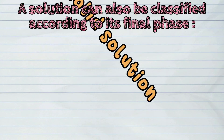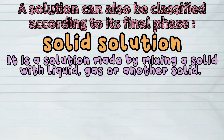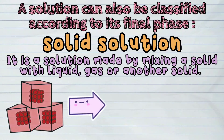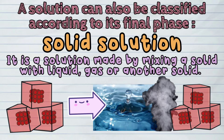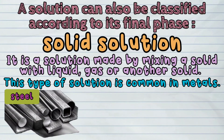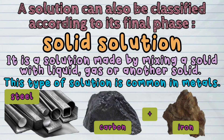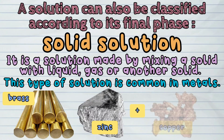And third, a solid solution. It is a solution made by mixing a solid with liquid, gas, or another solid. This type of solution is common in metals. For example, steel is a mixture of carbon and iron, and brass is made up of zinc and copper.